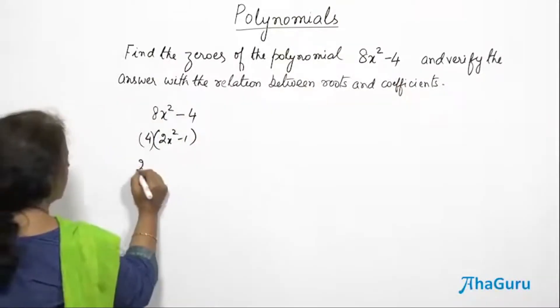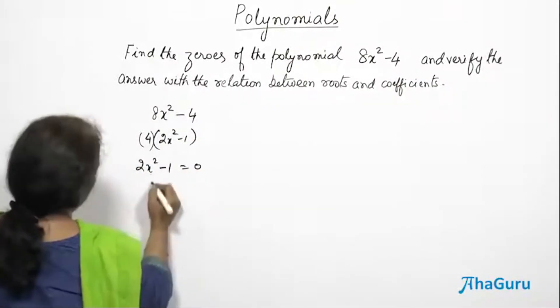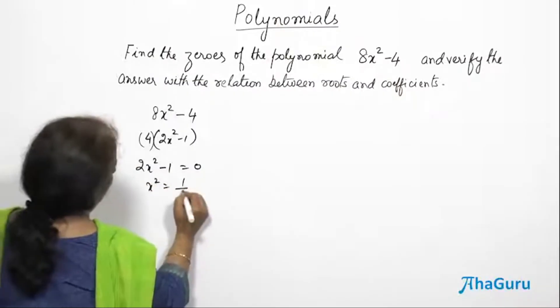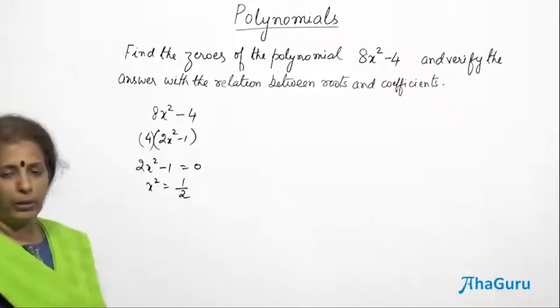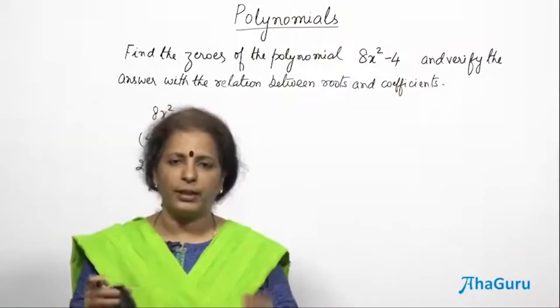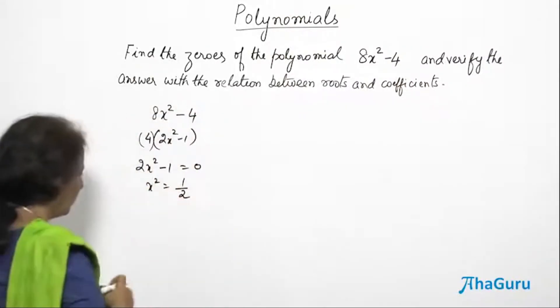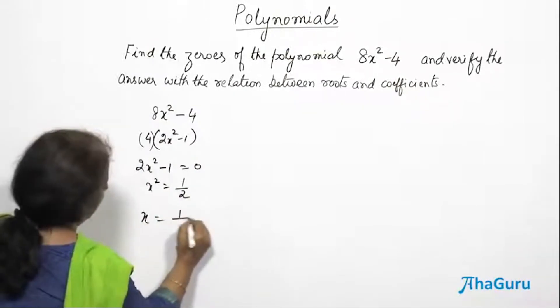So that gives us 2x² - 1 = 0. x² = 1/2. So square of x is equal to 1/2. What two values of x when multiplied will give me half? One value will be 1/√2.